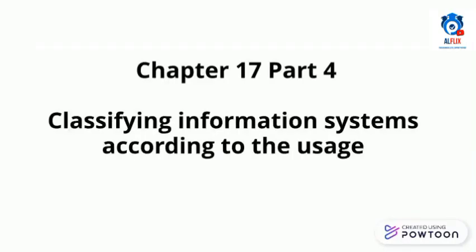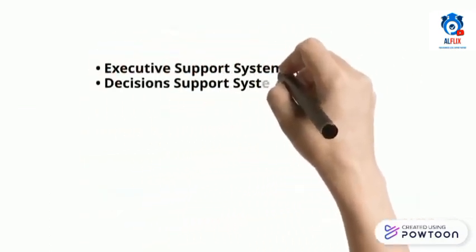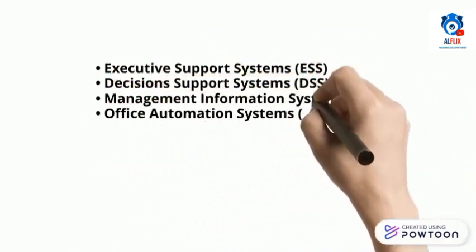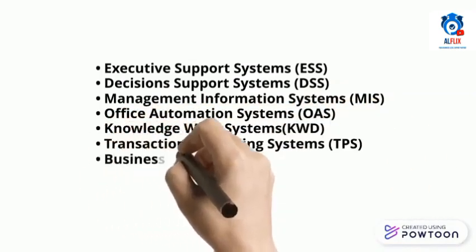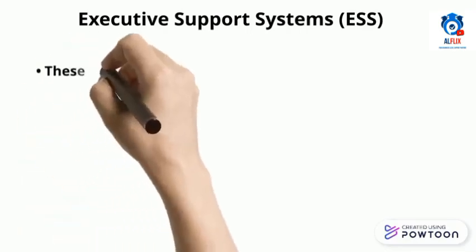This is the next video in the chapter 17 series. Today we'll be looking into classifying information systems according to their usage: executive support systems, decision support systems, management information systems, office automation systems, knowledge work systems, transaction processing systems, and business intelligence systems. Now let's look into each of them individually.